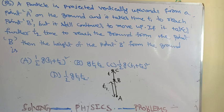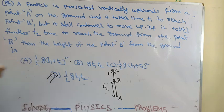Option C is half g into (t1 plus t2) whole square — I think option C is repeated. Option D is the correct answer, and we are going to see how in the next few minutes. I want to give you a try — you can pause the video and attempt it.